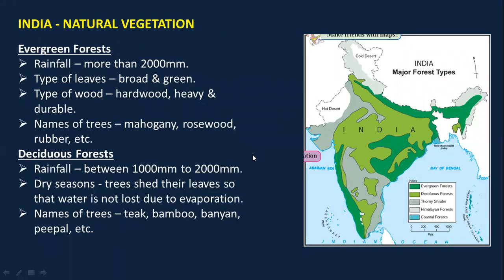Okay students, let's move ahead to Chapter 5, that is Natural Vegetation and Wildlife. First we'll talk about the natural vegetation of India. It is divided into various types: evergreen forest, deciduous forest, thorny shrubs, Himalayan forest, and coastal forest.